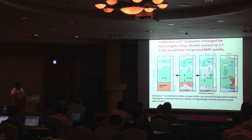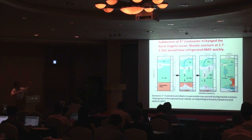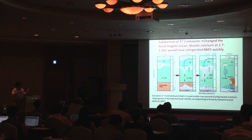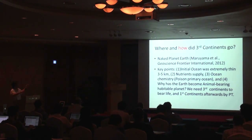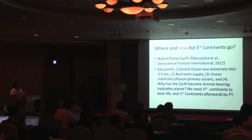An important implication is that the basal magma ocean should have been frozen, because cold droplets of anorthositic continent descend to refrigerate it. We must then consider the rising calcium perovskite plumes. The naked planet Earth — by which I mean the Earth was almost bare of surface water, only 3 to 5 km deep — had nutrient supply and ocean chemistry that poisoned the primordial ocean. Why has the Earth become an animal-bearing habitable planet? We need past life, and we need third continents to bear life. First continents increased afterwards by plate tectonics.